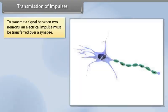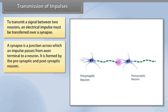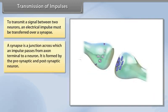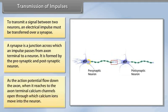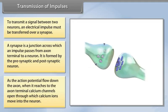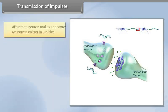Transmission of impulses. To transmit a signal between two neurons, an electrical impulse must be transferred over a synapse. A synapse is a junction across which an impulse passes from axon terminal to a neuron. It is formed by the pre-synaptic and post-synaptic neuron. As the action potential flows down the axon and reaches the axon terminal, calcium channels open, through which calcium ions move into the neuron.